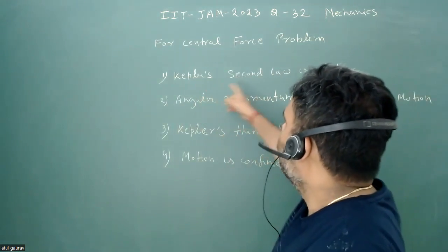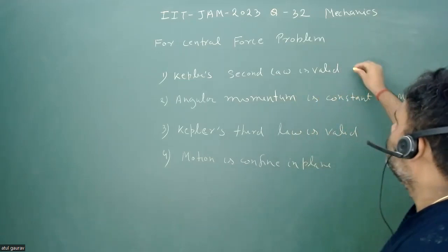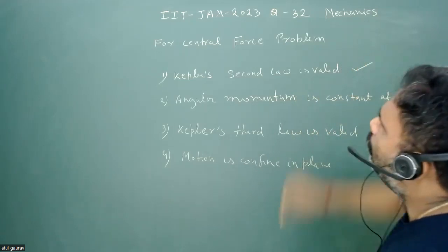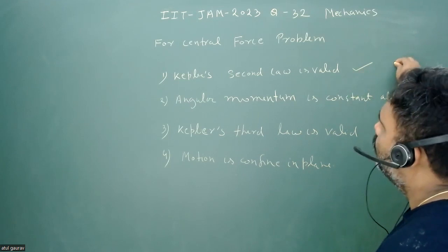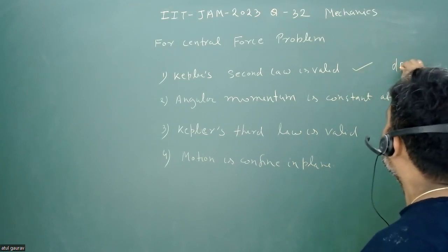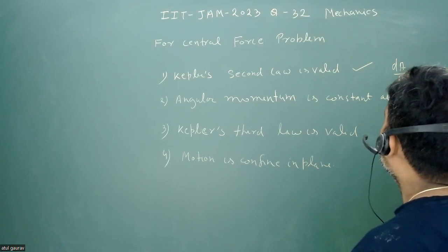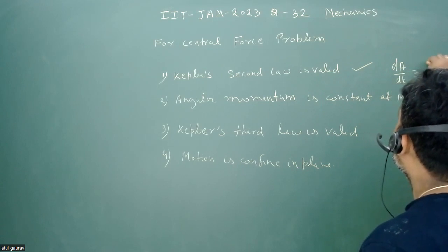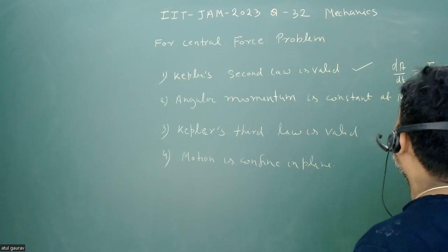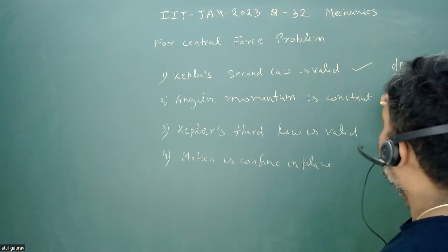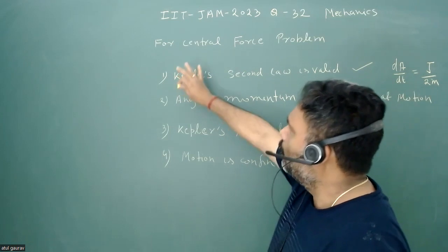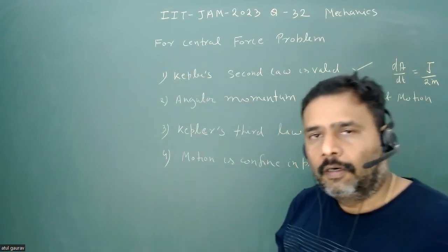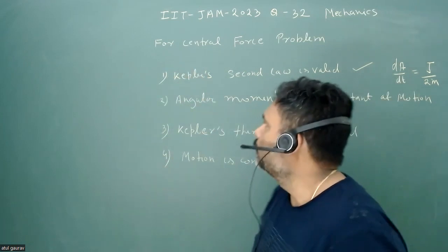First statement is that Kepler's second law is valid. So yes, this statement is correct for all central force because second law is nothing but the aerial speed and that is da upon dt is equal to j upon 2m and there is nothing to do with the potential. It is valid for all possible central force problems, so this is correct.